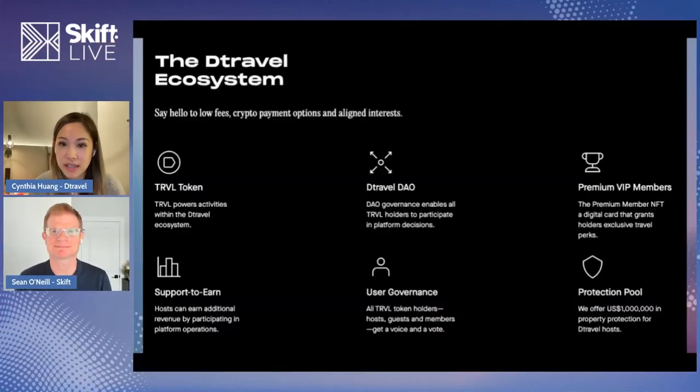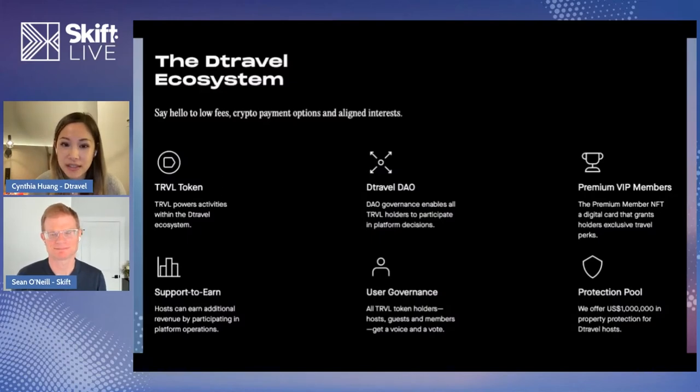Guests will be able to book using traditional payment options like fiat and also popular cryptocurrencies, including our native token TRVL. On the surface, that's essentially what Detravel is. But below that, we are so much more. We are also a DAO — a decentralized autonomous organization — which is a Web3 native organization. That means we are community led and community owned.